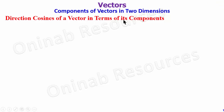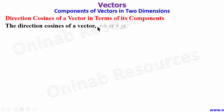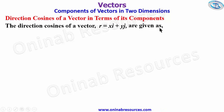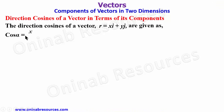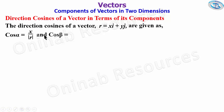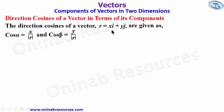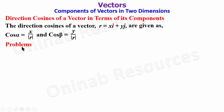We then go to the direction cosines of a vector in terms of its components. The direction cosines of a vector r = xi + yj are given as cos α = x / |r| and cos β = y / |r|. If the vector is in three dimensions, there will be a third component over |r|. We now look at problems.